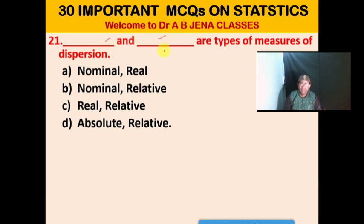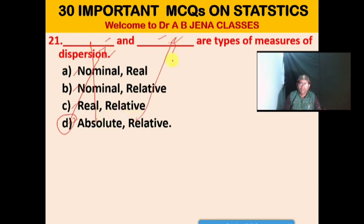Next MCQ: Dash and dash are types of measures of dispersion. A. Nominal. B. Nominal and relative. C. Real and relative. D. Absolute and relative. D is the right option. Absolute and relative are types of measures of dispersion.